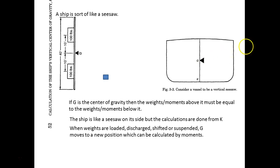If we have a KG and then we add weights, subtract weights, or shift weights, we can keep track of all that and determine, using the theory of moments or the shift of G formula, how that's going to impact our center of gravity — where it's going to move. That is going to be a fundamental thing we'll be calculating for stability.